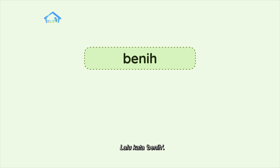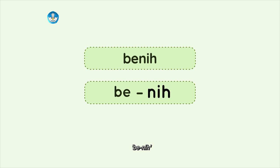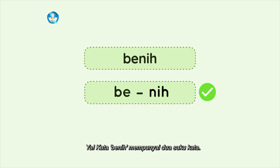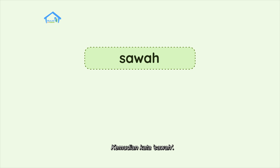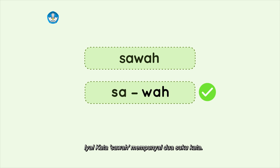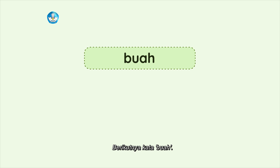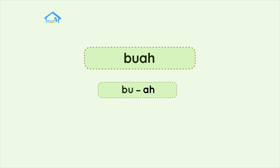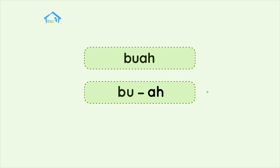Lalu, kata benih. Apakah mempunyai dua suku kata? Be-ni. Ya, kata benih mempunyai dua suku kata. Kemudian, kata sawah. Apakah sawah mempunyai dua suku kata? Sa-wa. Iya, kata sawah mempunyai dua suku kata. Berikutnya, kata buah. Apakah buah mempunyai dua suku kata? Bu-wa. Iya, kata buah mempunyai dua suku kata.